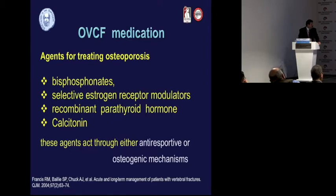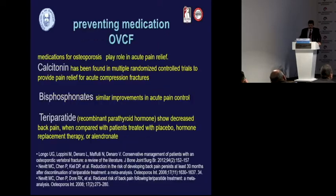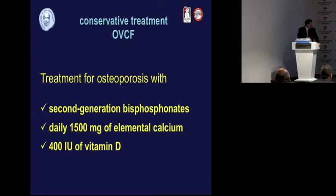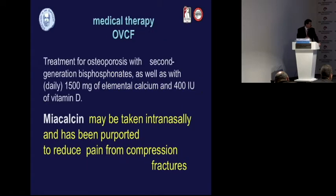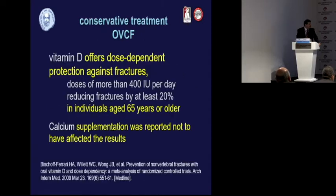Agents to treat osteoporosis include bisphosphonates, selective estrogen receptor modulators, recombinant parathyroid hormone, and calcitonin. Calcitonin, bisphosphonates, and teriparatide appear to help with pain control. On bisphosphonates: ibandronate at approximately 150 mg per month or alendronate at 70 mg per week, along with calcium and vitamin D3. Calcitonin can be taken intranasally and has been reported to reduce pain from compression fractures.